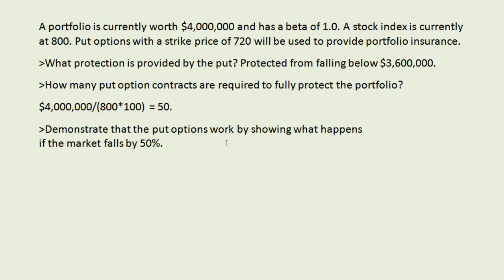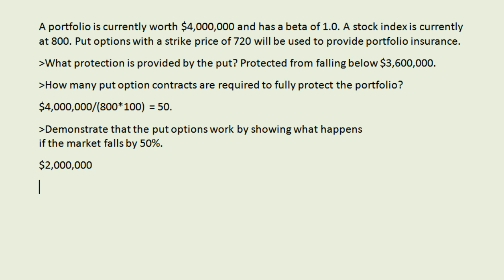Next we can verify that this actually works with a demonstration showing what happens when the market falls by 50%. If the market falls by 50% and we have a beta of one, we'd expect our portfolio to fall by 50%, meaning our portfolio is now worth 2 million dollars instead of 4 million dollars. However, we also have a put option on the stock index — if the market falls by 50% we'd expect the stock index to be at 400.